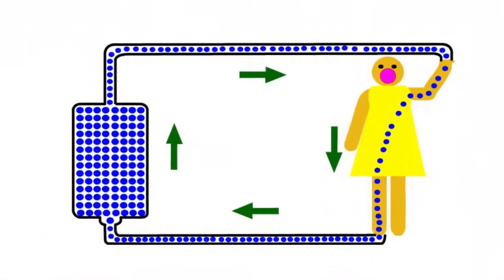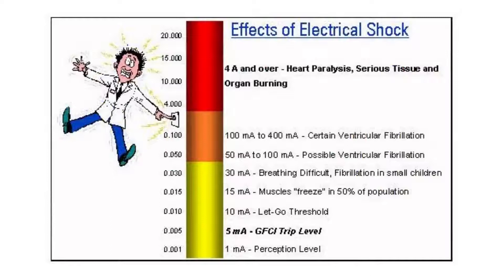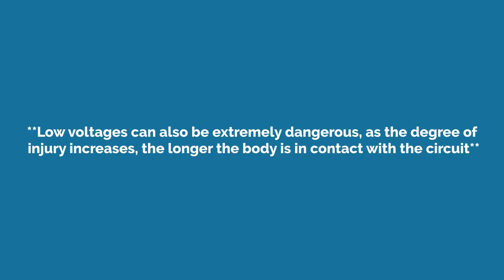Electric shock occurs when a current passes through the body. This can cause burns or no marks at all, but in either case an electrical current passing through the body can cause internal damage or cardiac arrest. Under certain circumstances, even a small amount of electricity can be fatal.